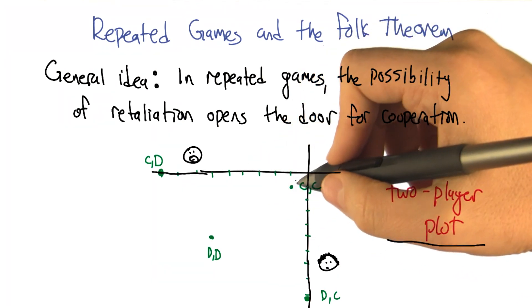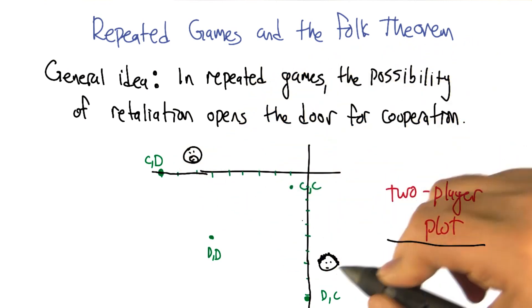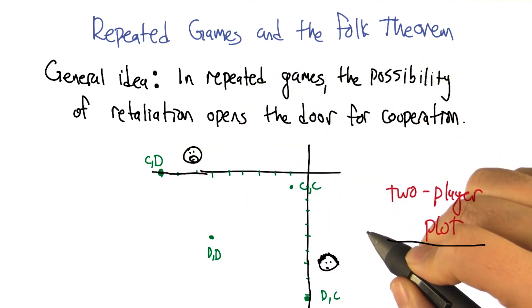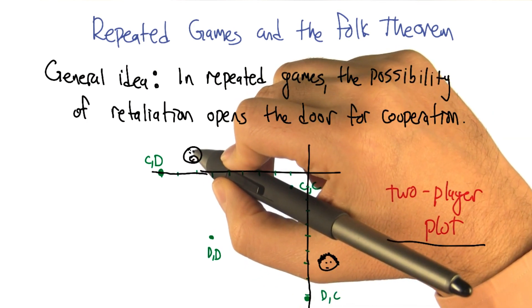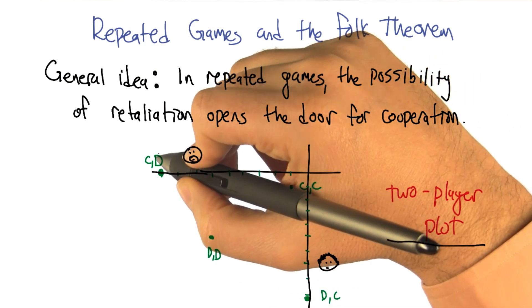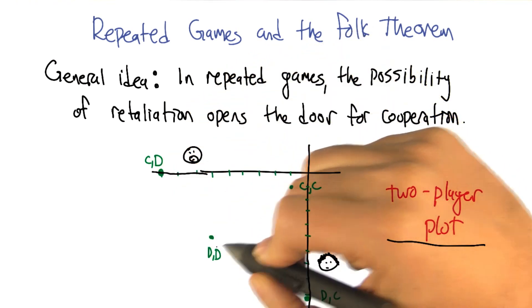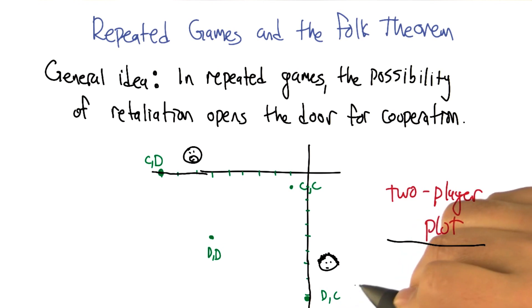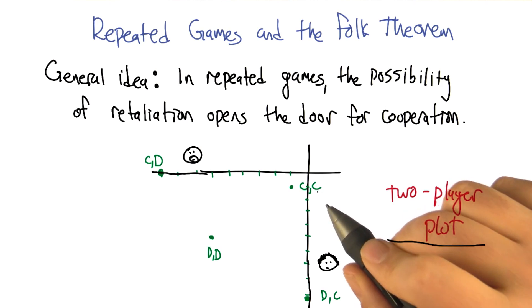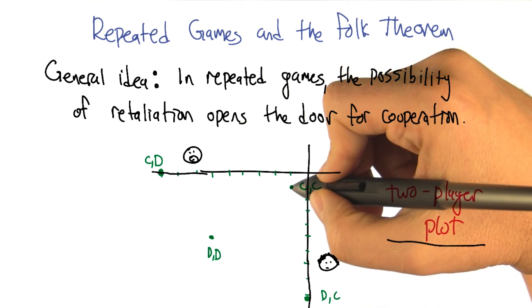Remember this Prisoner's Dilemma game. We've got two players, Smooth and Curly, and there's a bunch of joint actions that they can take. Smooth cooperates and Curly defects, or they both defect, or they both cooperate, or one defects and cooperates in the other direction. So for each of those joint outcomes, each of those joint action choices, I'm going to put a dot on a two-dimensional plot.